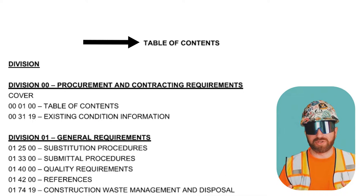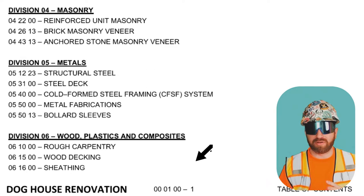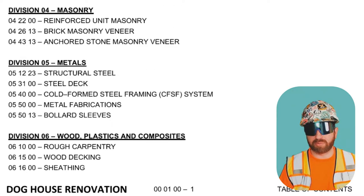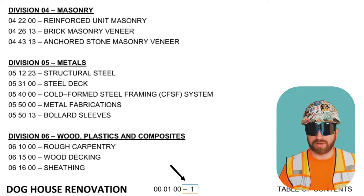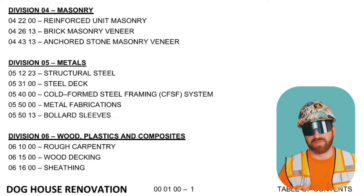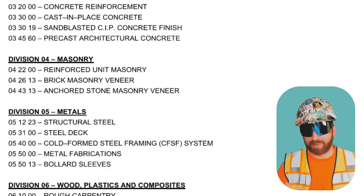There will typically be a title at the top of the page to indicate which division you are in, and the division number is usually also at the bottom of the page. Following the division number at the bottom of the page, you'll usually find a dash one, dash two, etc., to indicate which page you're on within the specification division to further help you navigate.